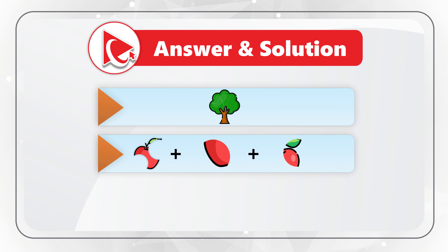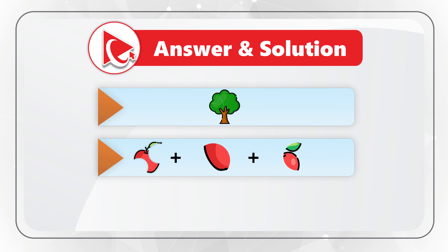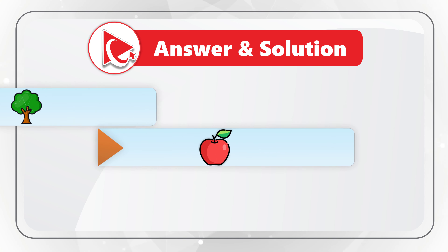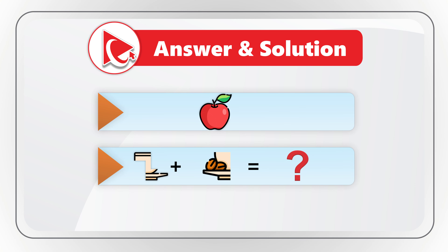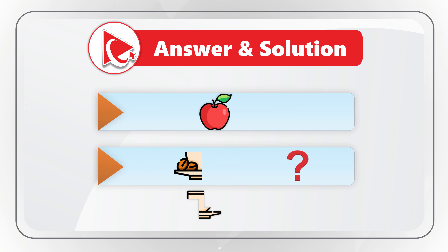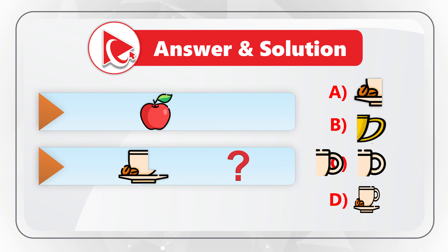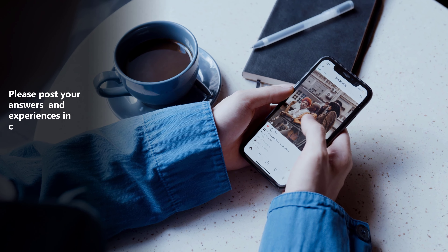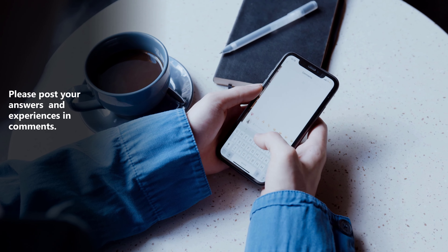The same is true for the second object, which represents an apple — rearranging and combining gives a very good-looking apple. The same is true for the third object, which represents a coffee cup with coffee beans. If we rearrange the objects and select the correct choice, which is choice C, we get a complete picture of a coffee cup and coffee beans. Did you figure it out? Please post your experiences in comments.